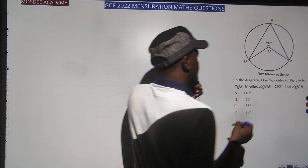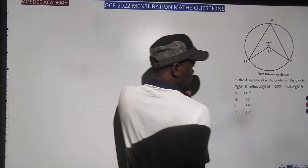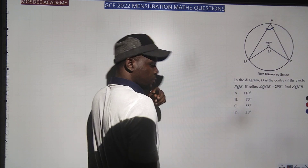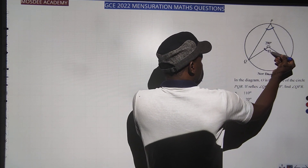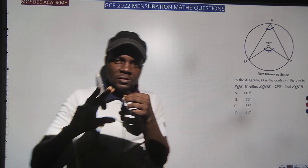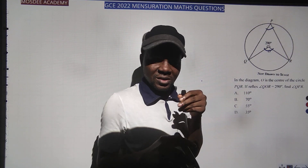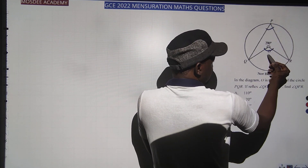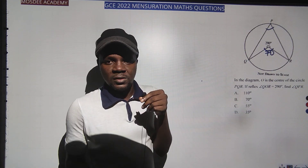Keep in mind that when an angle is written in the form QPR, that middle letter is the vertex — that is what you are looking for. Now, a complete angle at a point is 360°. The reflex is 290°, so what you have left is 360 minus 290, which is 70°. That is the non-reflex angle QOR at the center.